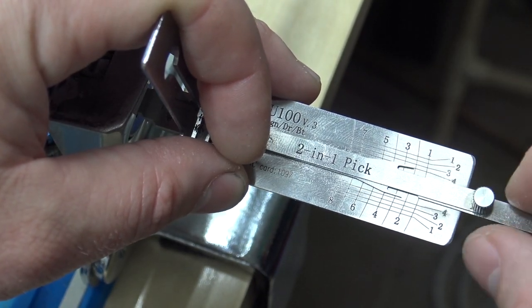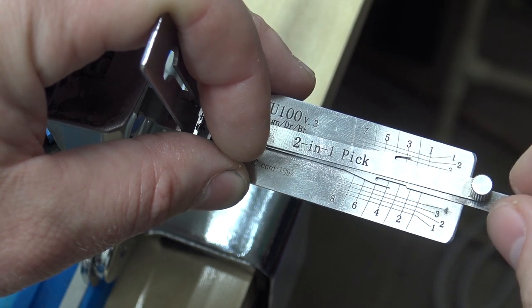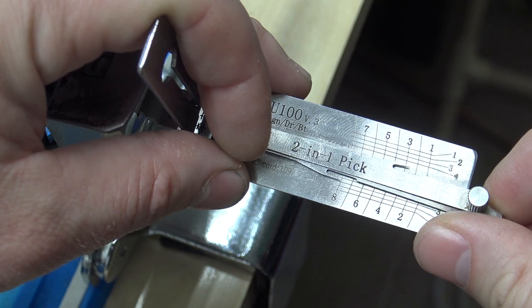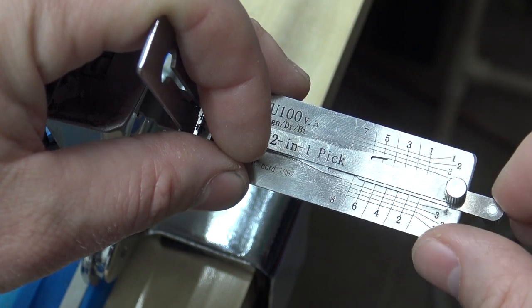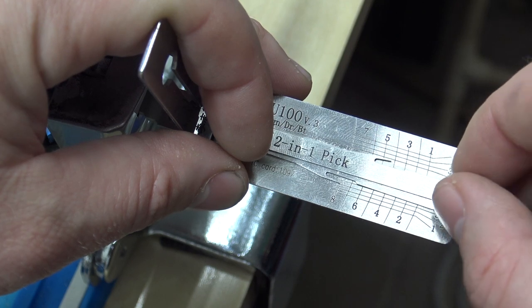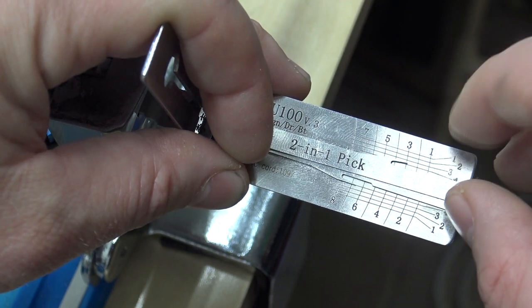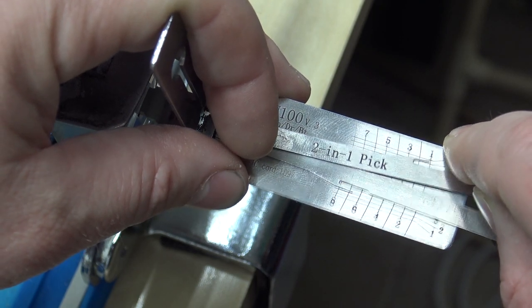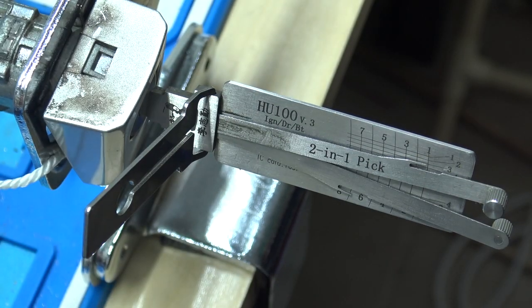Just go even numbers first. We're going to pick position 2, skip 4, 6, 8. We don't need 5 or 7, so we'll just go to 3. 3 is actually not binding, so we'll skip 3. I'm going to hit number 1, and it actually opened.